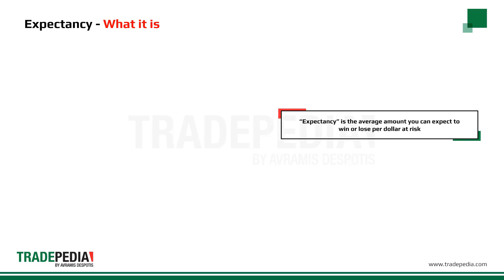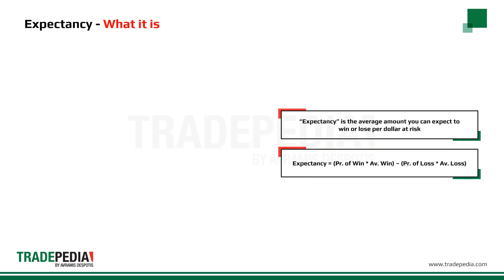Expectancy is the average amount you can expect to win or lose per dollar at risk. Mathematically, it is defined as the probability of win times the average win, minus the probability of loss times the average loss.